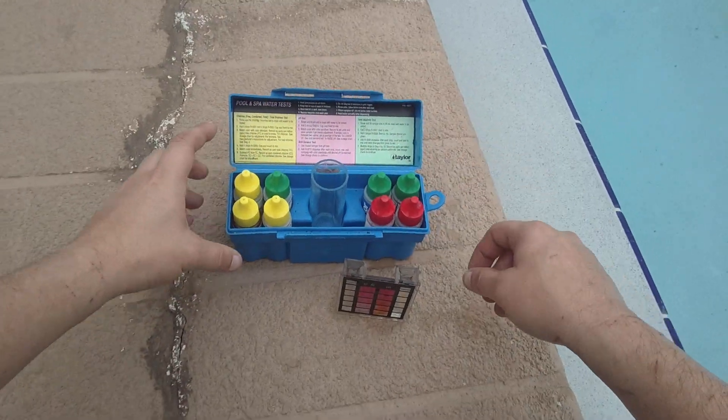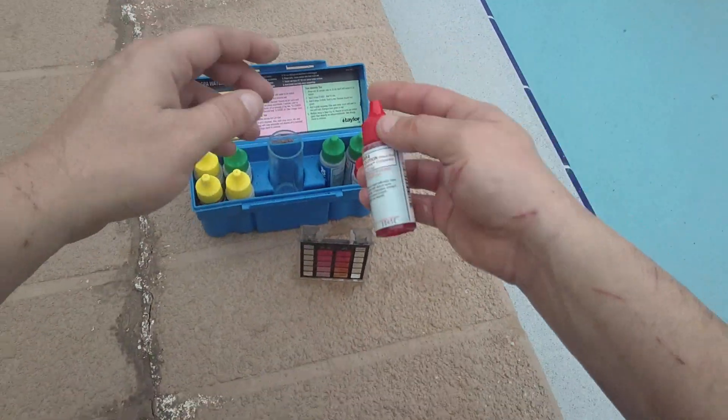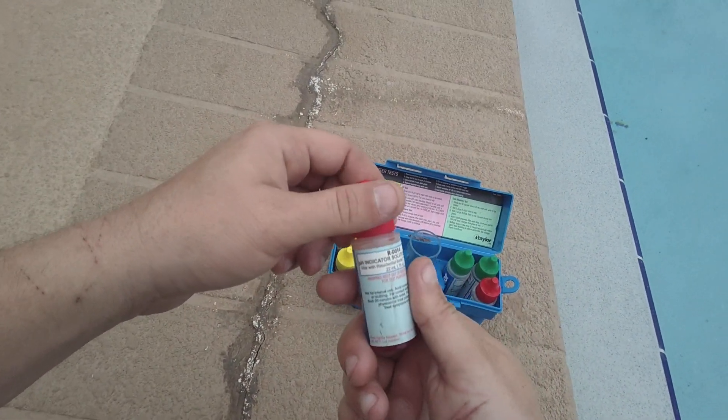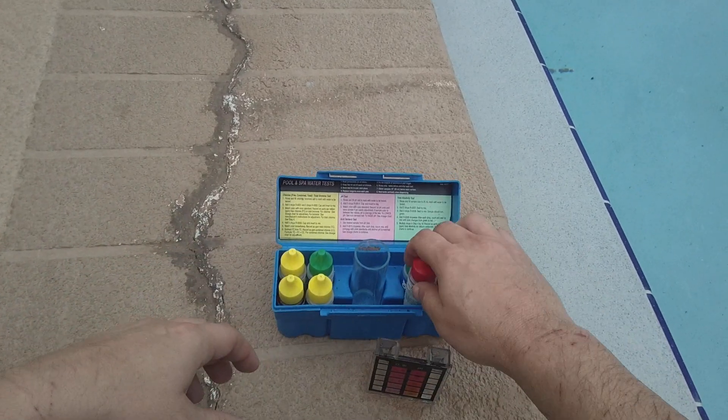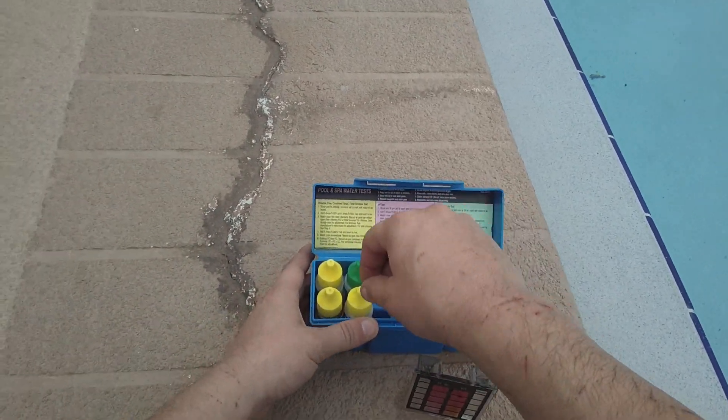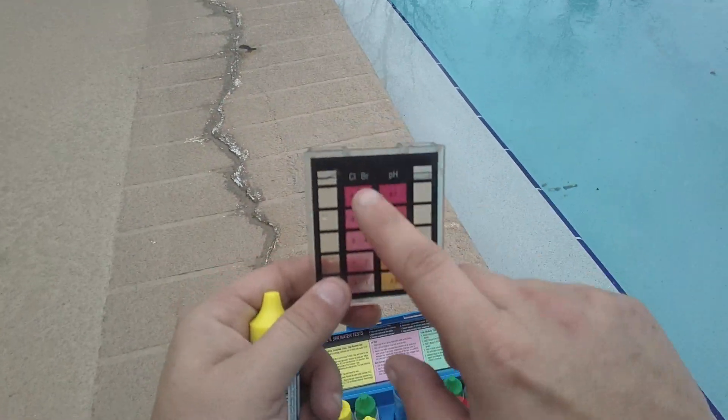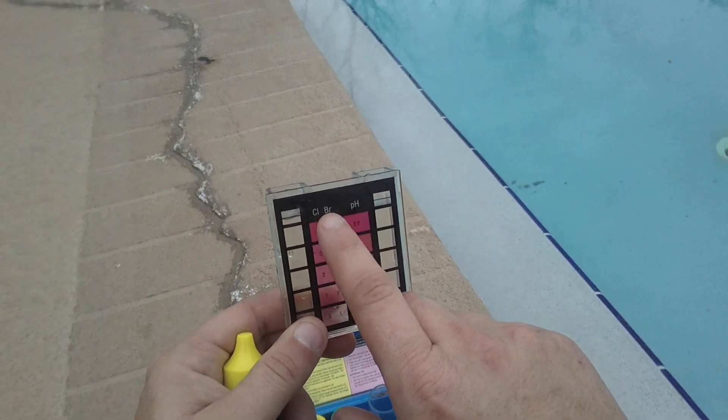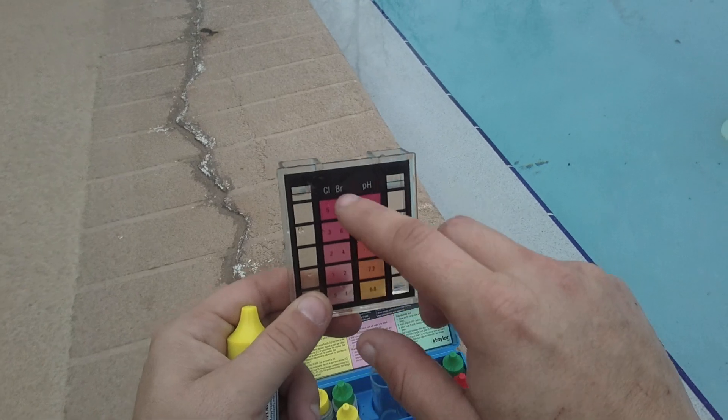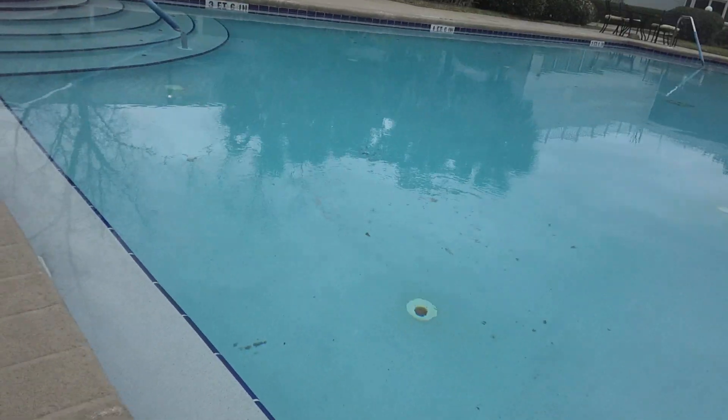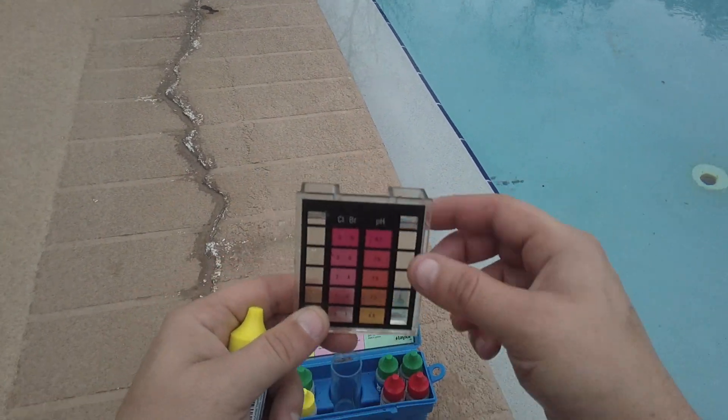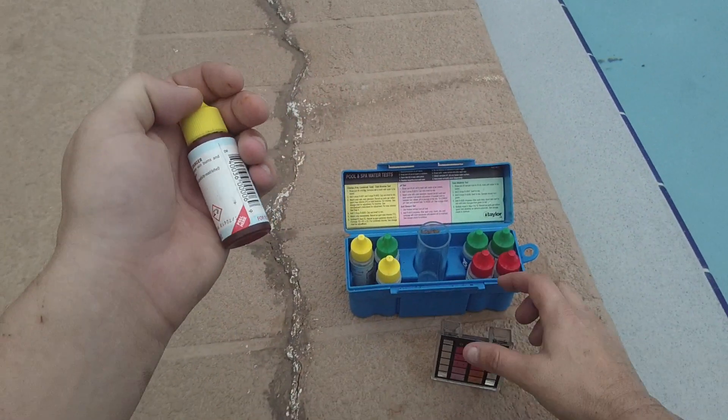Alright, I'm gonna do the pH. We're gonna just go section by section here. Right here on your gauge you see chlorine, this is for bromine which we don't have - a hot tub - so we don't have to worry about that. This is your pH here.